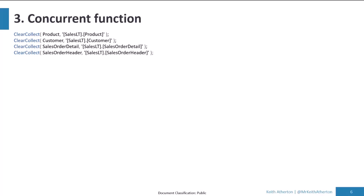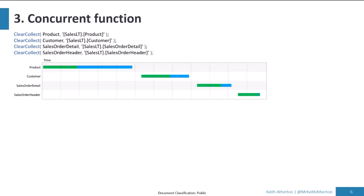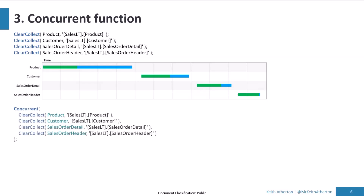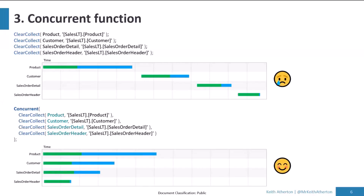Tip three: the Concurrent function. Here's an example of Power Fx pulling from four different tables and storing them into four collections locally. Checking network traffic in the browser, we can see these run sequentially — product table first, then customer, and so on. However, if you wrap these in a Concurrent function, all those calls fire at the same time and work simultaneously. The concurrent version will complete much quicker, and this scales up if you've got multiple operations to run concurrently.